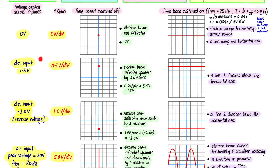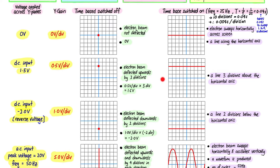In the second example, there's a DC input of 1.5 volts connected to the y-plates — like a 1.5V battery — and the y-gain is set at 0.5 volts per division. The electron beam will be deflected upwards by 1.5 ÷ 0.5 = three divisions when the time base is off. When the time base is switched on, the beam sweeps left to right, giving a horizontal line three divisions above the axis.